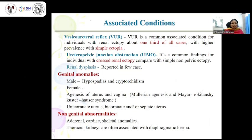Other associated anomalies include male genital anomalies such as hypospadias and cryptorchidism. In females, Müllerian agenesis and Mayer-Rokitansky-Küster-Hauser syndrome can occur, involving agenesis of the uterus and vagina. Uterine anomalies such as unicornuate, bicornuate uterus, or uterine septum may also be encountered. Non-genital abnormalities involving the adrenals, cardiac system, and skeletal system can occur, and thoracic kidneys are often associated with diaphragmatic hernias.